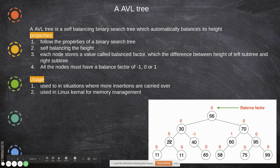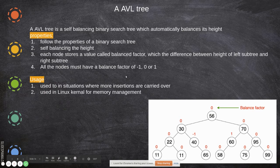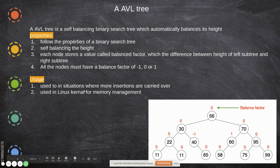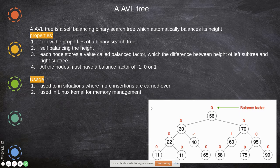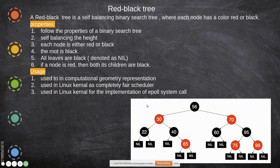The balance factor is the difference between the height of the left subtree and the right subtree, stored at each node. All nodes must have a balance factor of -1, 0, or 1. The AVL tree is mainly used in situations where more dynamic insertions are carried out, and it is used in memory management of the Linux kernel.